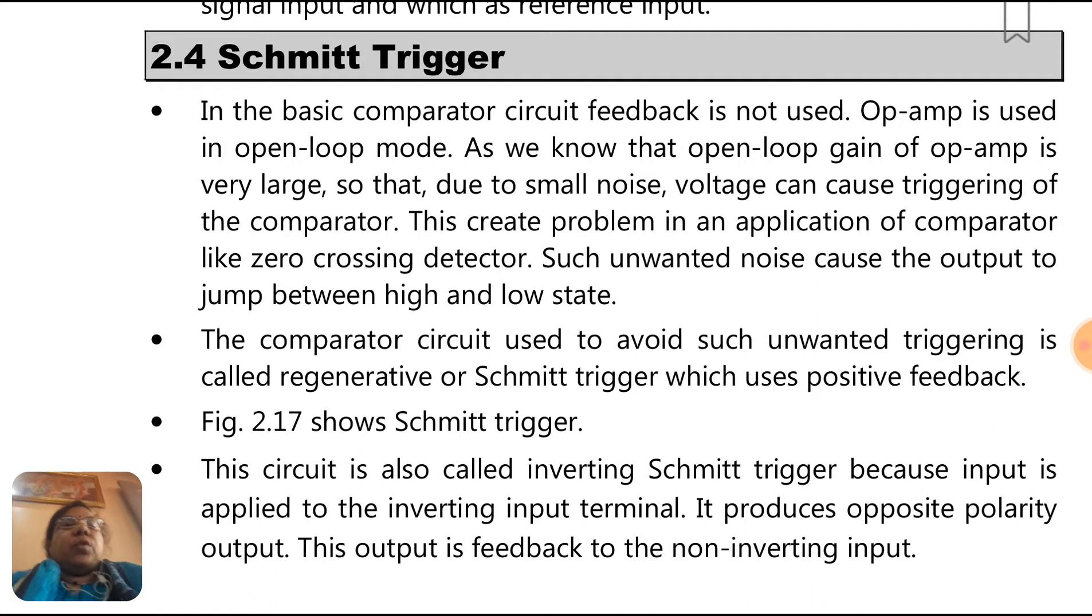In the basic comparator circuit, feedback is not used. Op-amp is used in open loop mode. As we know that open loop gain of op-amp is very large, so that due to small noise voltage can cause triggering of the comparator. This creates a problem in applications of comparator like zero crossing detector.